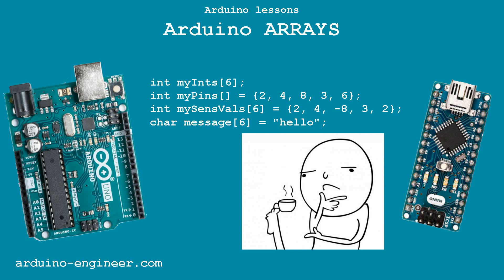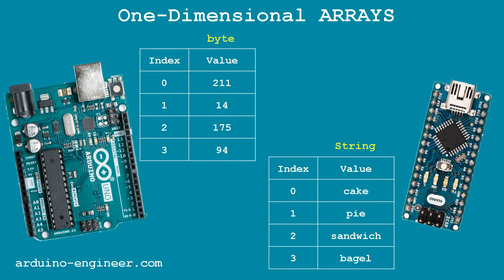Same type means having one simple type: byte, int, char, or others. For example, if you created an array of elements of the byte type, then you cannot write an integer less than zero or more than 255 into any cell. Arrays with one index are called one-dimensional, with two indexes two-dimensional, and so on. Most often programmers use one-dimensional and two-dimensional arrays, less often three-dimensional ones. An array can be represented as a table of values of any parameters.